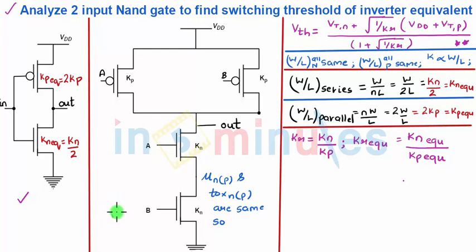In the second column I have drawn a two input NAND gate and we have already seen how to draw a two input NAND gate and it also has Kn and Kp's mentioned next to this.